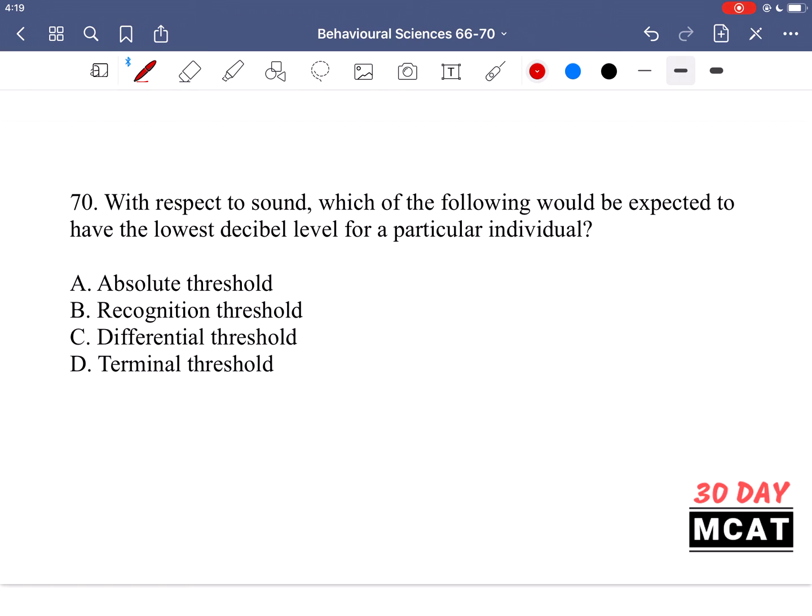In question 70, it says, with respect to sound, which of the following would be expected to have the lowest decibel for a particular individual? So, which one would have the lowest decibel level? For this, you have to understand what each of these are. And then from there, you can figure out which one is the lowest decibel level.